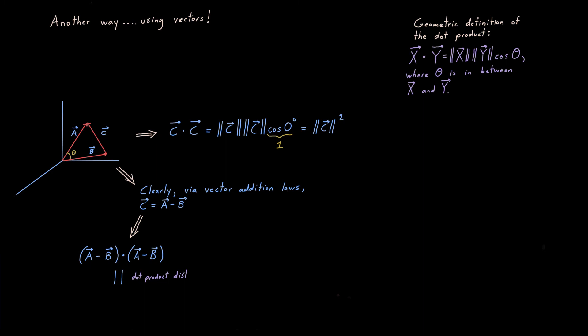So, C dot C is the same thing as A minus B dotted with A minus B. Now, I'm going to use dot product distributive laws here. I'm going to assume them for now, I'll prove them in a different video, but they're just a consequence of the geometric definition up top. So, saving some steps, instead of doing monomial distribution twice, I'm going to just do binomial distribution once.